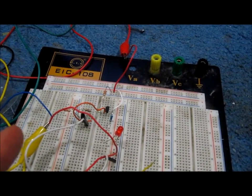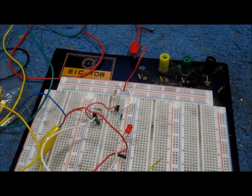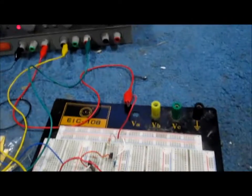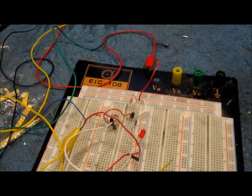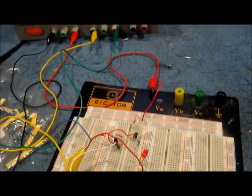Right now there's power to the BC 557, about three volts which is sufficient to light the LED, but it won't turn on unless there's input voltage to the base of the BC 547.